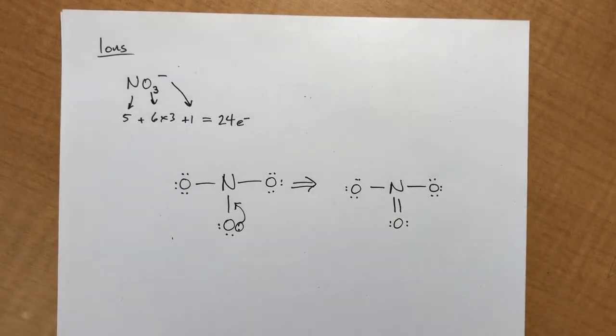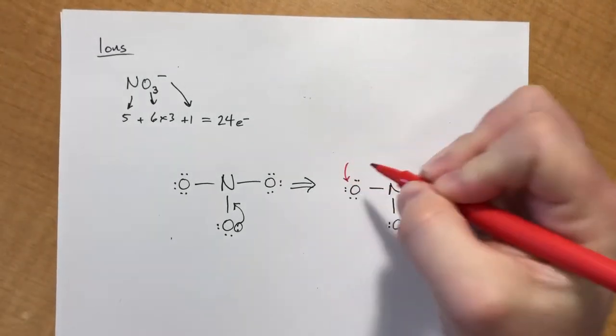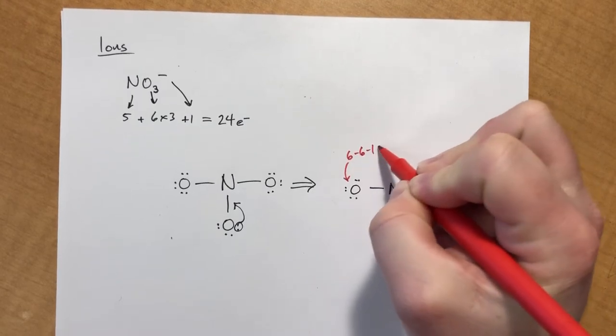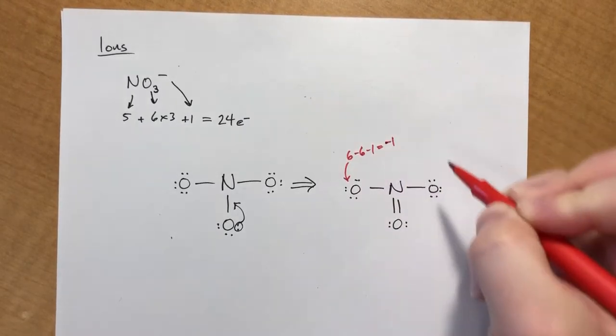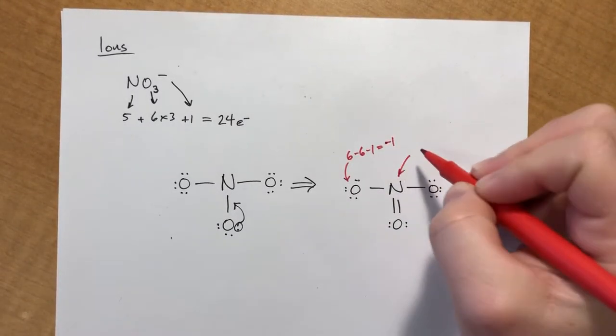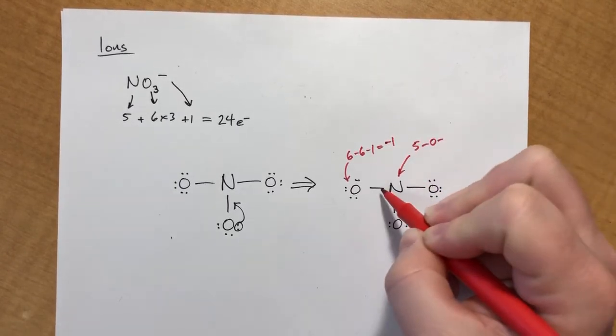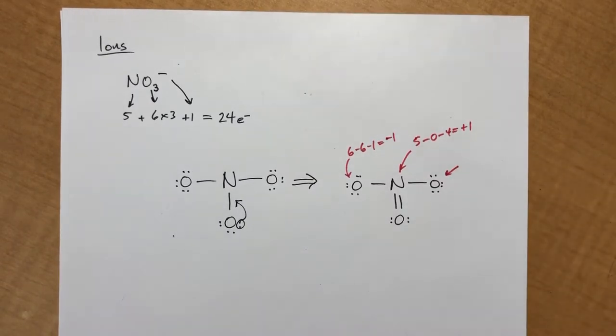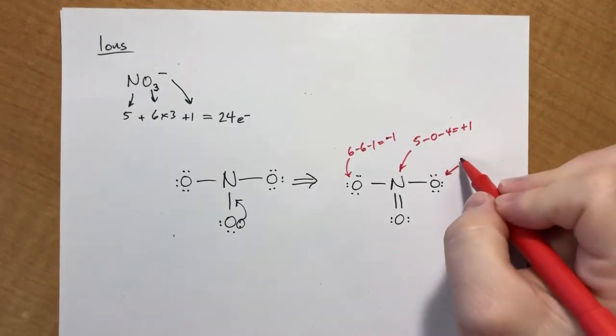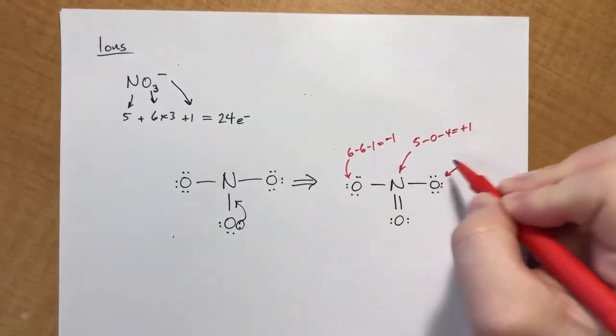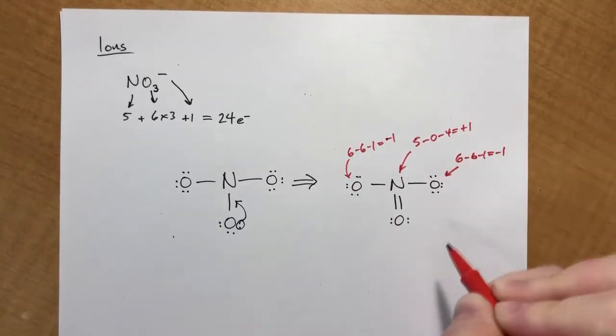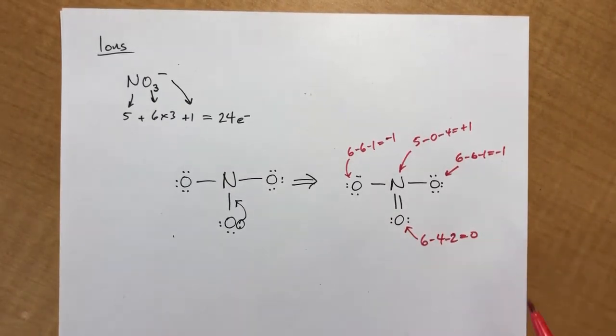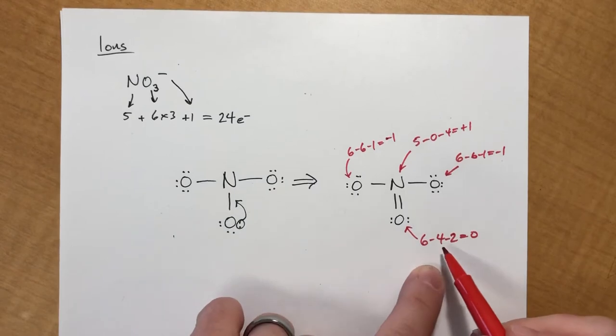And now this has an octet, this nitrogen has an octet, this has an octet, and this has an octet. So everything's got its octet. Now we're gonna check the formal charges. This is six minus one, two, three, four, five, six dots minus one line is negative one. Its nitrogen is five minus zero dots minus one, two, three, four lines would be positive one.